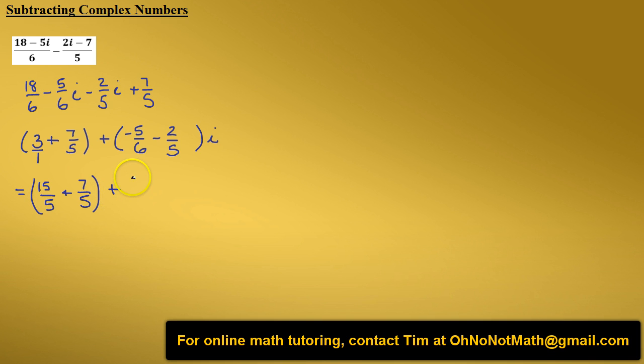Now let's do our imaginary part. We have negative 5 sixths minus 2 fifths. So our least common denominator is 30.